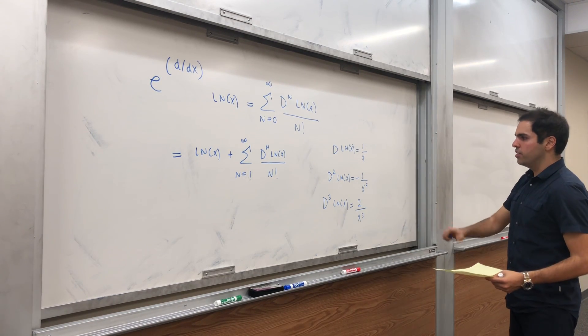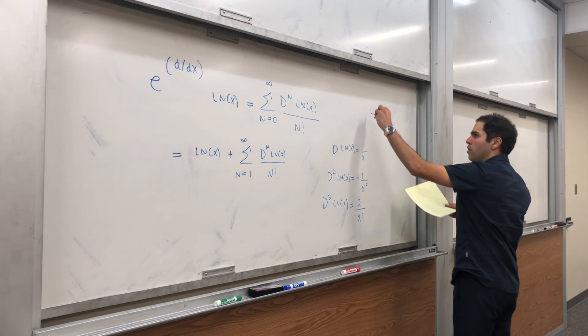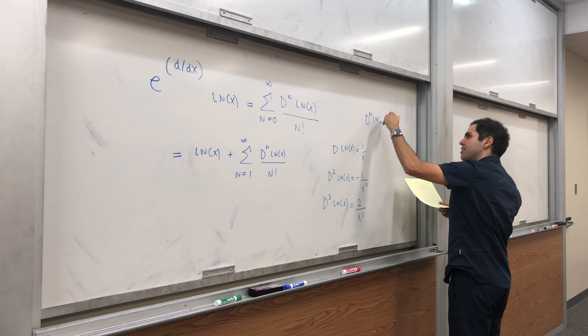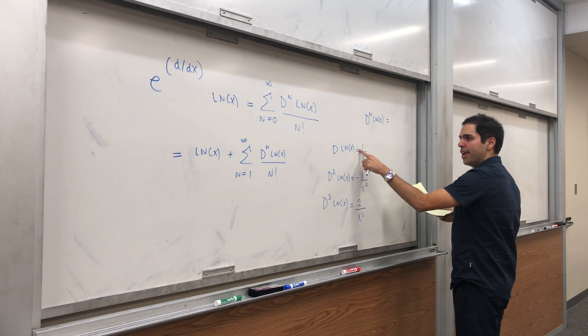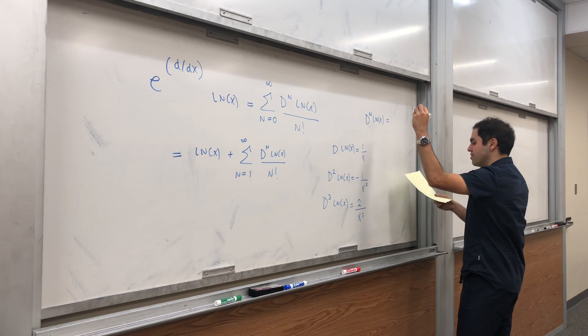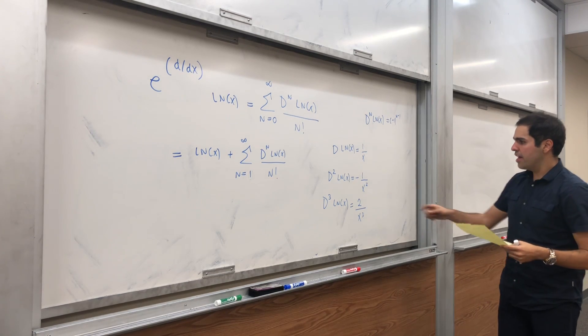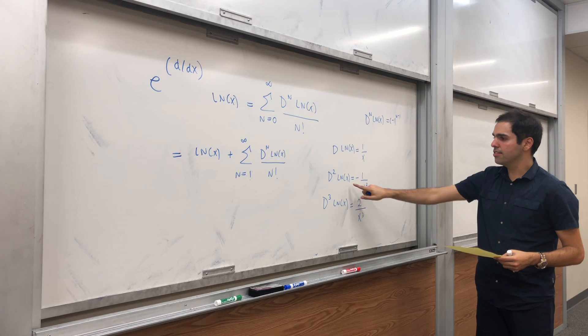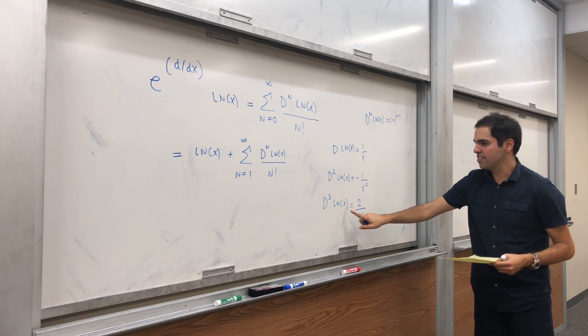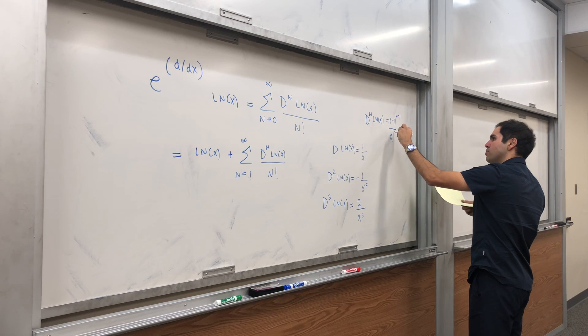And you can continue this way, but already notice the pattern. First of all, for d^n ln(x), we alternate signs, except it's plus, minus, plus, so it becomes (-1)^(n-1). And then, for d ln(x) we have 1 over x, d squared ln(x) we have x squared, d cubed ln(x) we have x cubed. So x to the n.